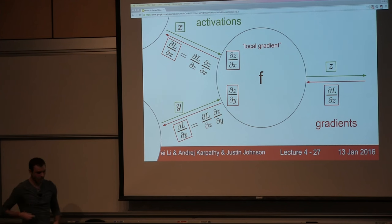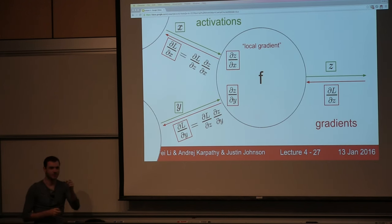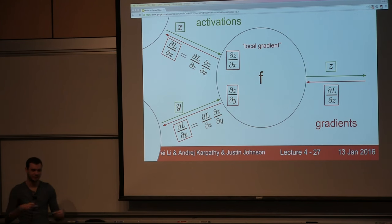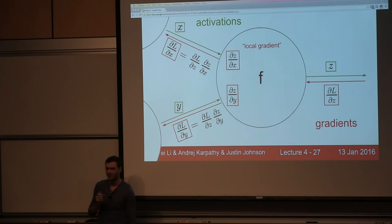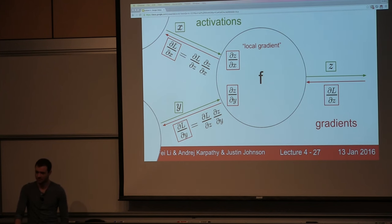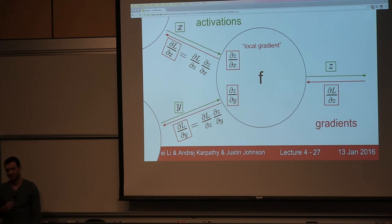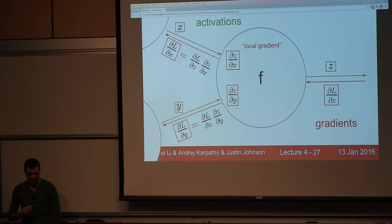If z is used by multiple nodes, you add the gradients — that's the correct thing to do. Regarding a student question about many inputs and squashing functions pushing values to the asymptote: yes, you can get vanishing gradient problems, which we'll address later.